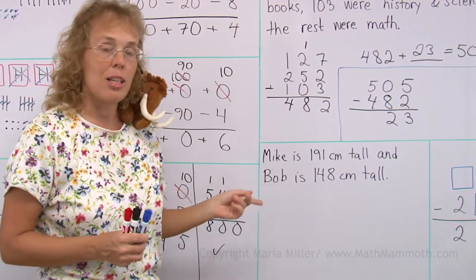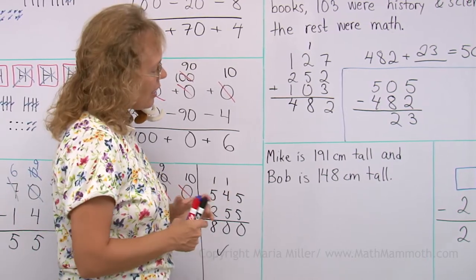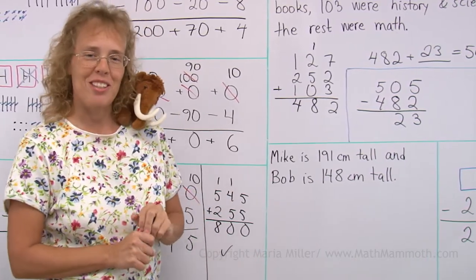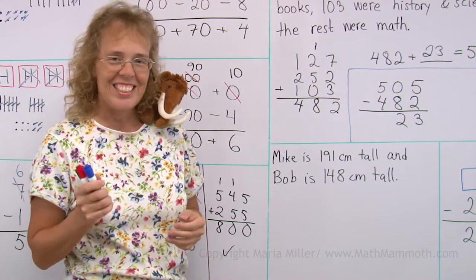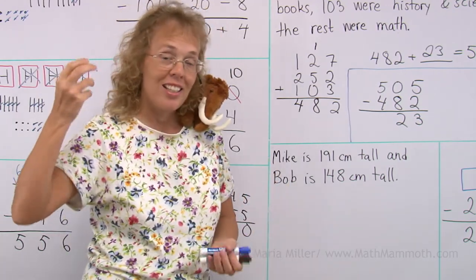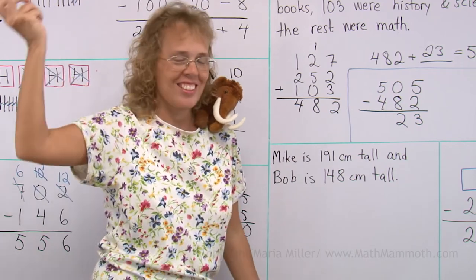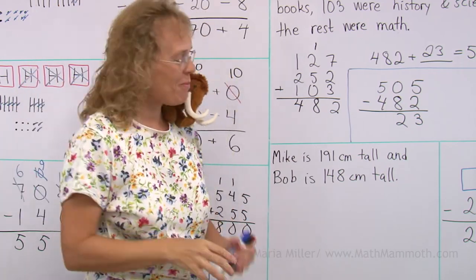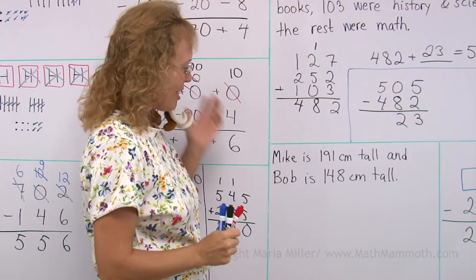Matthew is saying that we can add those numbers. And that tells us, what does it tell us if we add those numbers? That tells us that if Bob climbs on Mike's head, then how tall are those two together? Right? If we add those numbers. Right, Matthew, we could do that. Any other ideas?